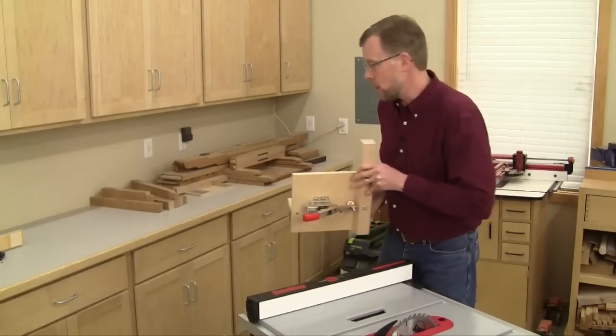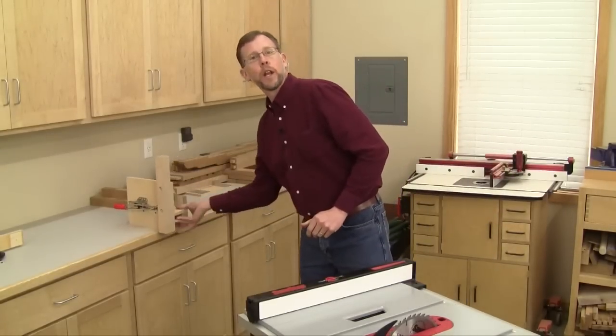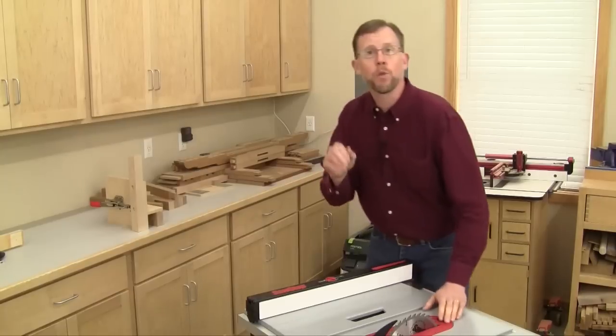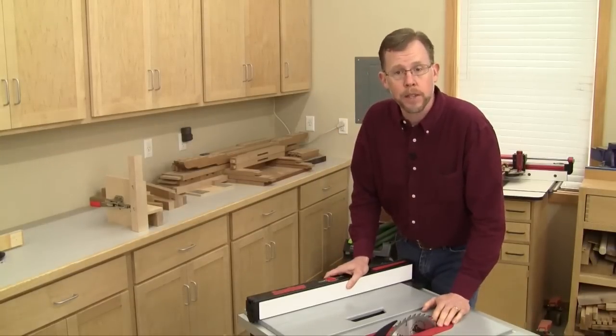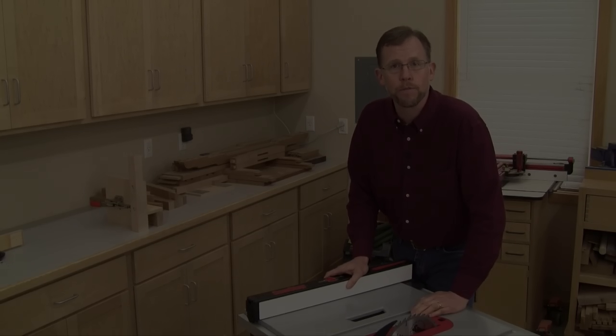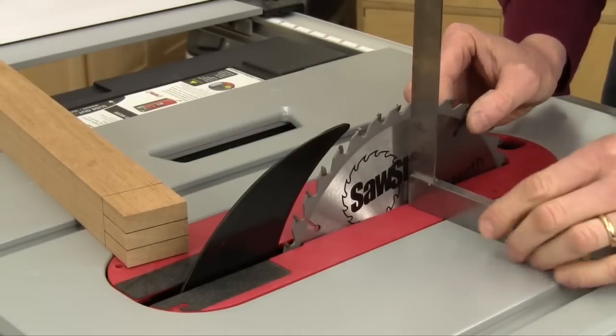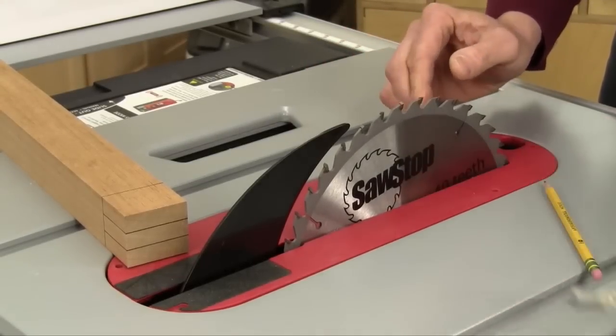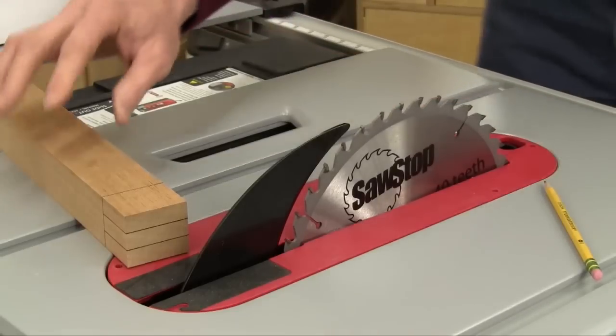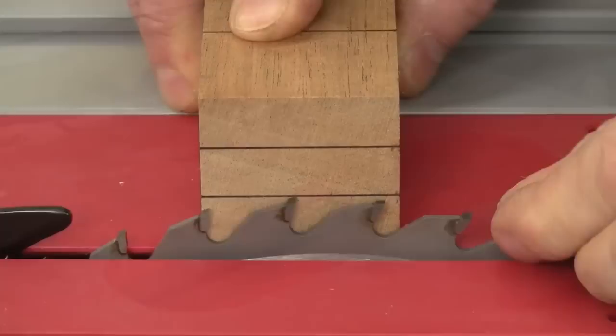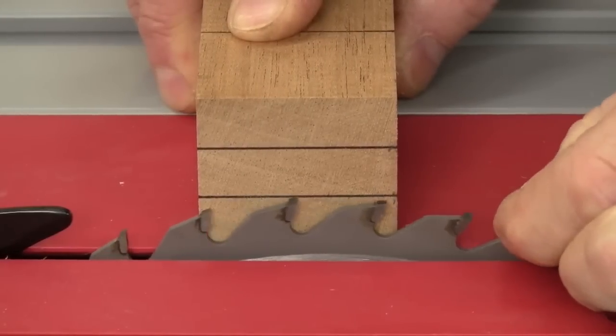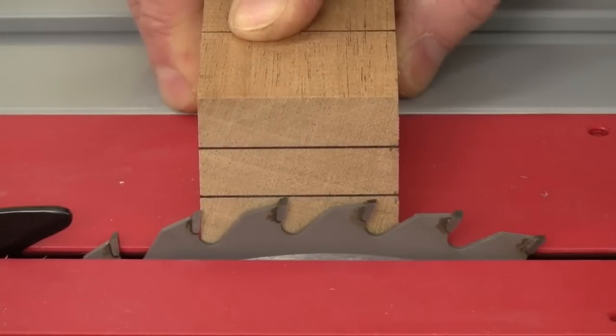But for the time being I'm going to set our jig aside until we're ready to make the cheek cuts, because we're actually going to start the tenoning process by cutting the shoulders. Start the process by making sure your saw blade is square to the table. Then adjust it until it just lines up with your cheek layout lines.